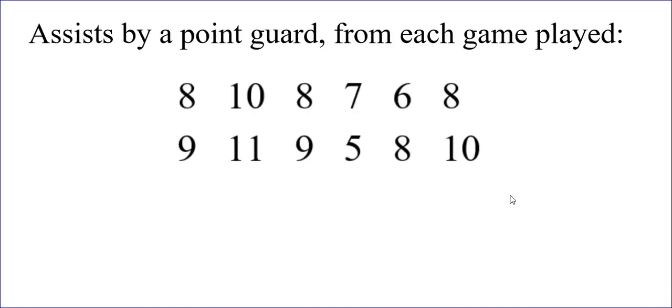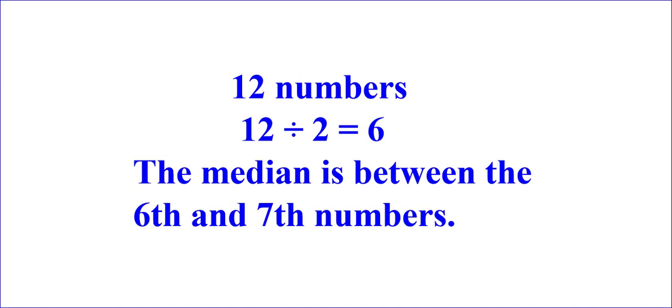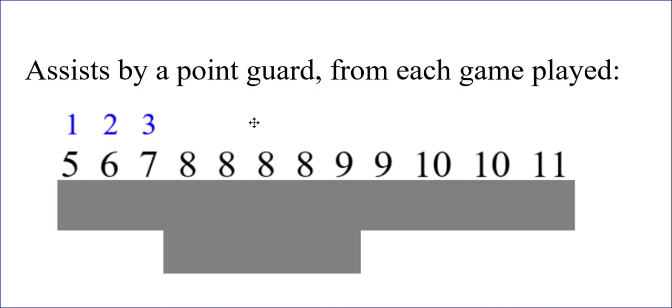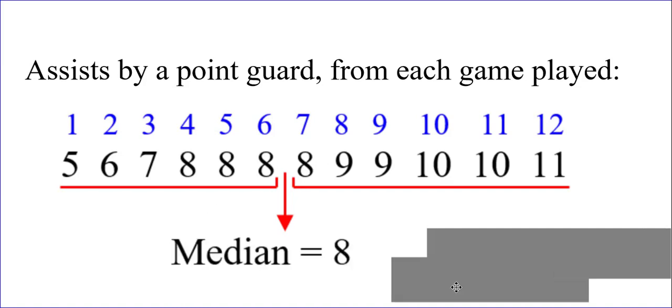So, let's go back to the original example I was using earlier with assists by a point guard. This was twelve numbers. And if you take twelve and divide by two, I would get six. That means the median is between the sixth and seventh numbers. Let me show you. One, two, three, four, five, six. We want what's between the sixth and seventh number. Because whenever you have an even amount of data, there's always two numbers in the middle. So, the sixth and seventh numbers are both eight. So, what's between eight and eight? Well, that's kind of a trick question. It's still going to be eight.